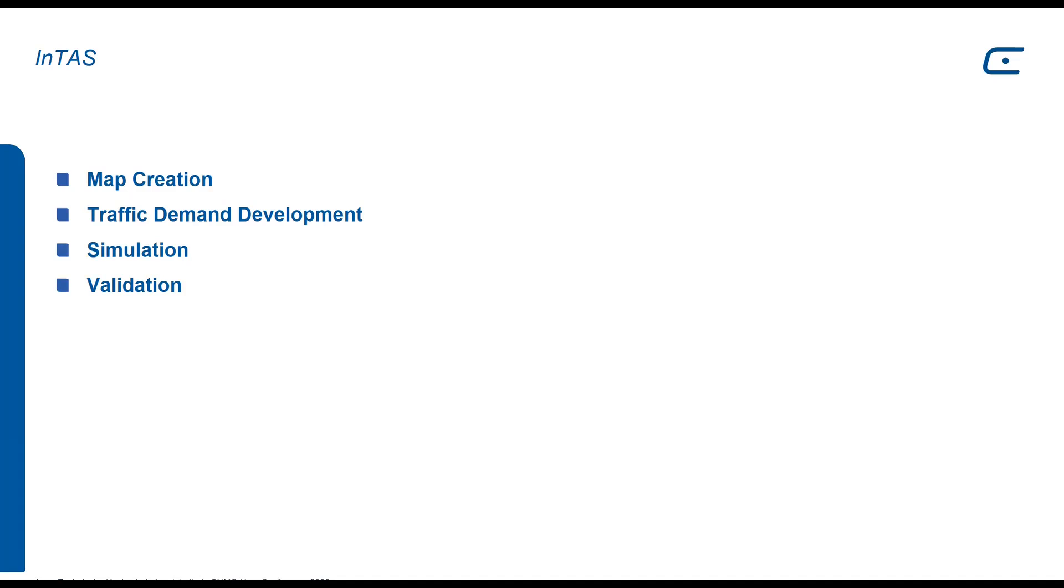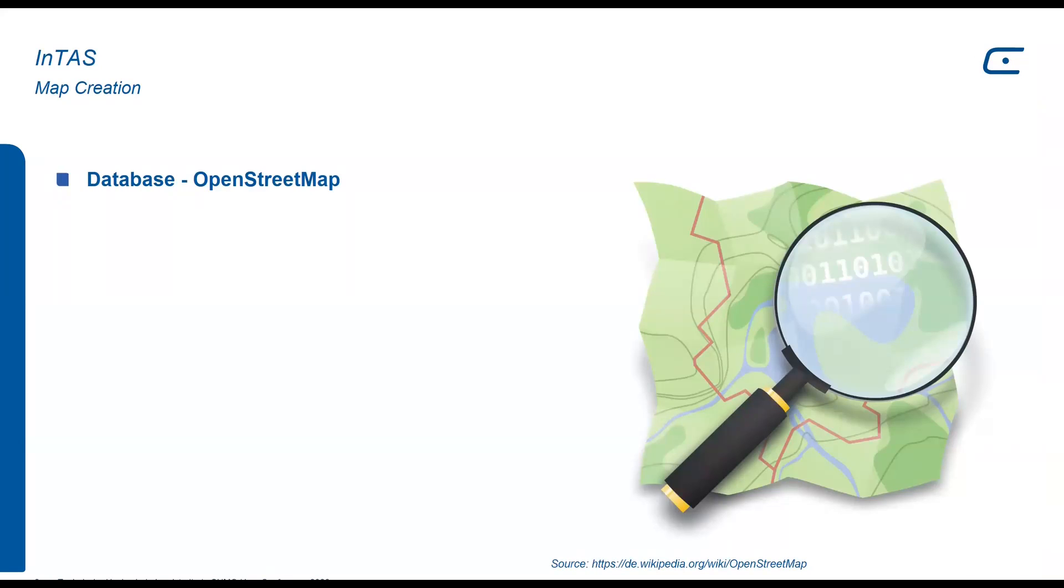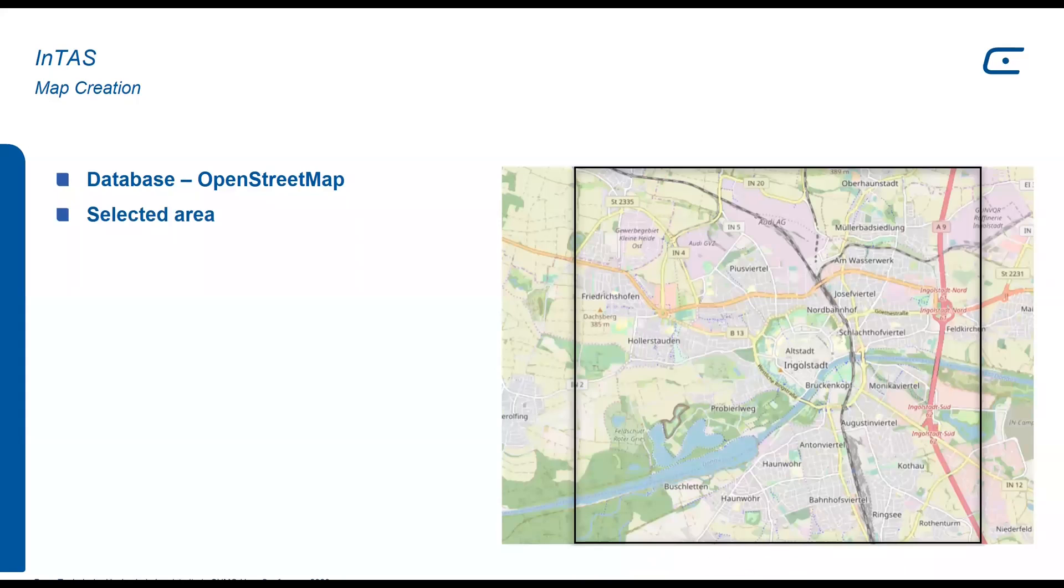We start with the map creation. We used the database from OpenStreetMap. In OpenStreetMap, we selected the desired border for our scenario, for InTAS. As you can see here, there are some villages that belong to Ingolstadt, but they are not inside of our scenario because their internal traffic is not relevant for this research. However, the traffic between these villages and the main core of Ingolstadt was modeled.